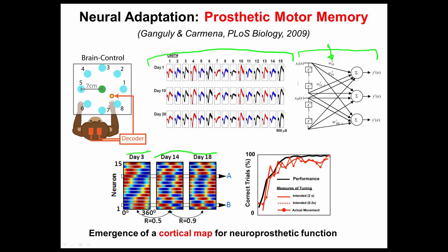This similarity of the maps is what we refer to as a prosthetic motor memory. In the next figure, you can see as a function of time how the similarity of the decoders co-varies with the actual learning, shown as the black curve, of the animal. So as the animal gets better, this motor memory becomes more stable.